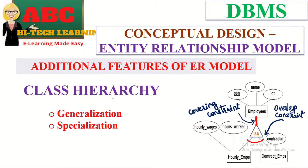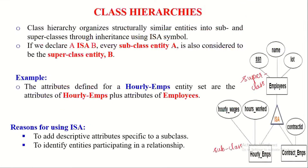Hello viewers. In this video, we are going to learn about the class hierarchy concept in the entity relationship model. Class hierarchy organizes structurally similar entities into subclasses and superclasses through inheritance using the ISA symbol. If we declare A is a B, it means that every subclass entity A is also considered to be superclass entity B.